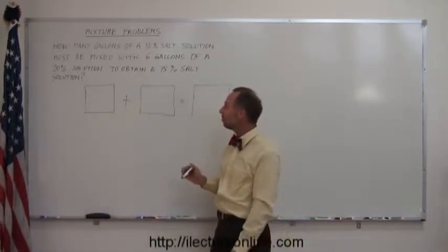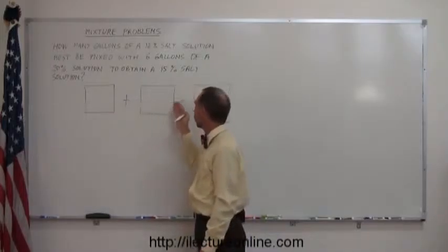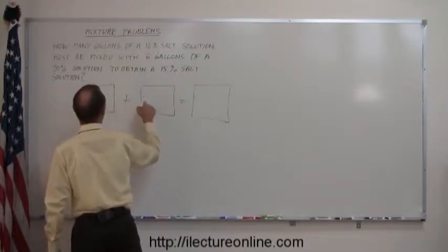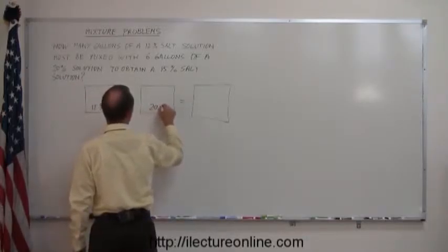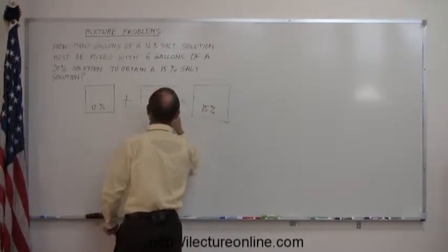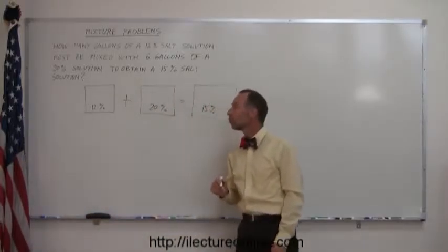In each case, we write down what the percentage of each solution is. The first is a 12% solution, the second is a 20% solution, and the final mixture is a 15% solution. So you write down the percent solution of each mixture.